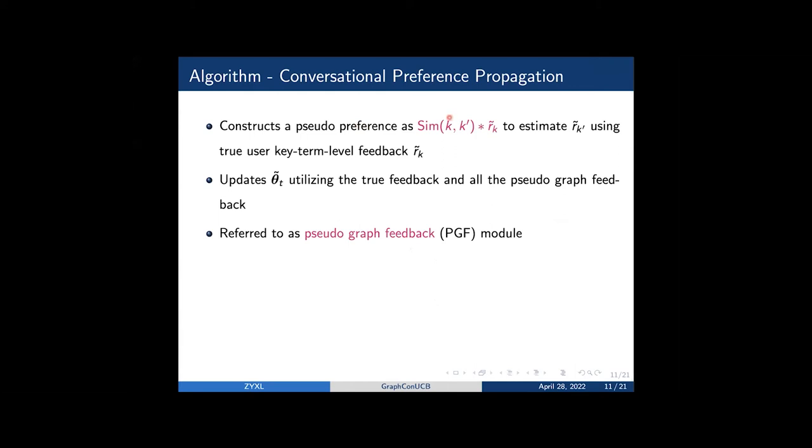After conducting conversations on key term K, the agent will construct a pseudo preference as similarity between K and K prime times tilded RK to estimate tilded RK prime using the true user-level key term feedback tilded RK. Our agent will update its estimate tilded c t star as tilded c t utilizing all the true feedback and the pseudo graph feedback. We refer to this as the pseudo graph feedback module.